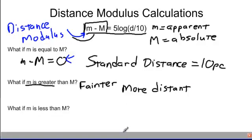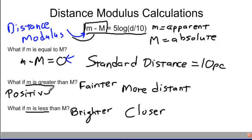And in the last case, we have what if m is less than capital M. So this star is actually, now again, is less than. That means that this is brighter than it truly should be. And that means that it is closer than 10 parsecs. So this would be a positive value of the distance modulus. If it's positive, it's far away. If it's negative, it is very close. Not necessarily what you would expect because we tend to look for positive numbers, but the positive numbers are more distant, further away, and the negative numbers are closer.